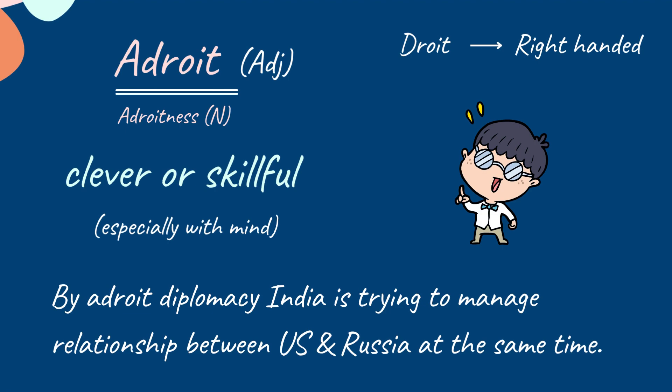Adroit. If a person is clever or skillful, especially with his mental ability, we use the word adroit. Droite is a French word which means right-handed. Adroitness is the noun form of adroit. For example: by adroit diplomacy, India is trying to manage the relationship between the US and Russia at the same time. We are trying to say that India has skillfully managed the relationship between both countries, so we have used adroit.